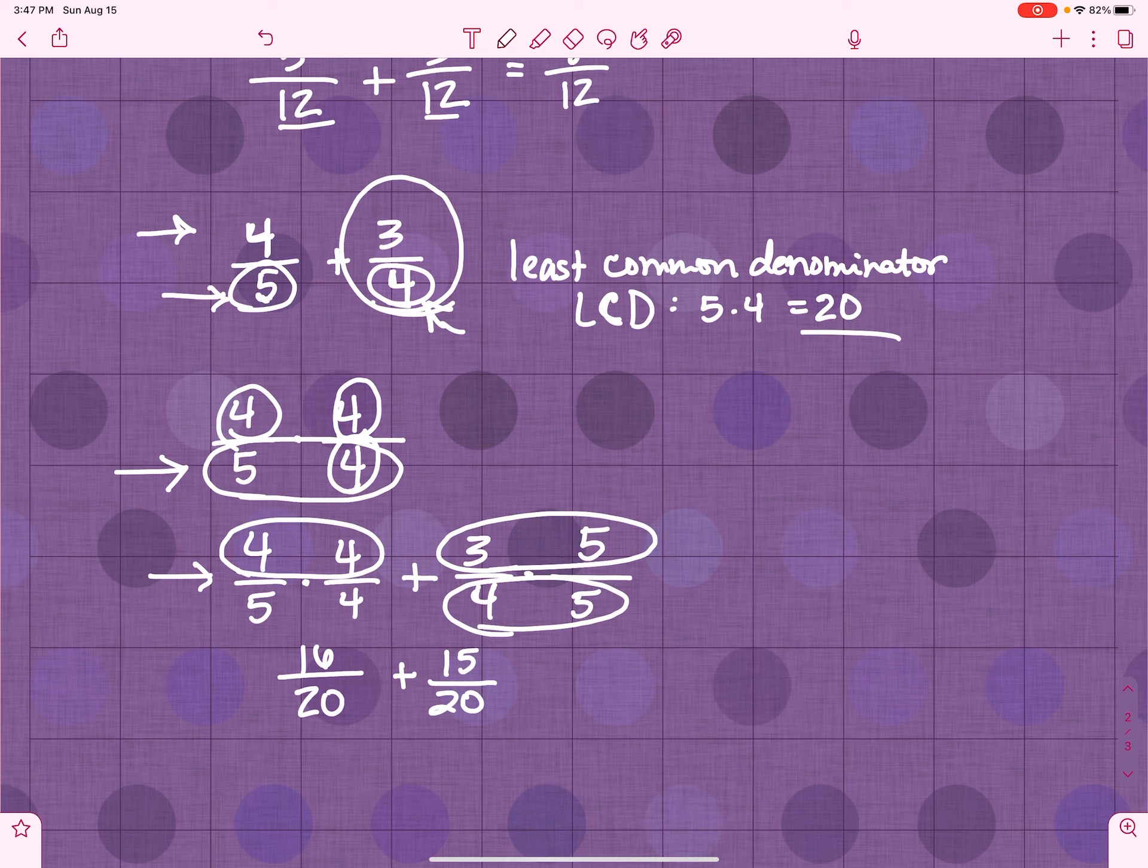Now, notice what happens. I get 16 over 20 and 15 over 20. Now, these denominators are the same. So, now I can add the numerators together. The denominator is going to stay 20. My numerators get added together and I have 31 over 20. Easy peasy. Lemon squeezy.